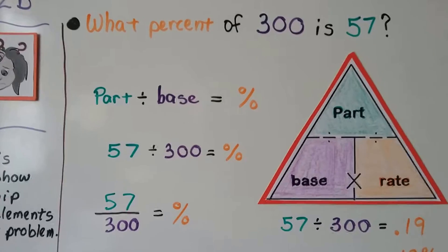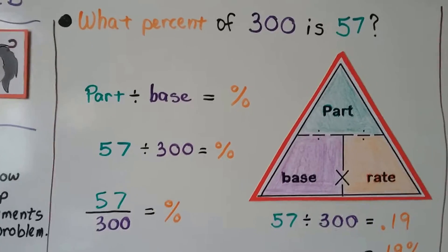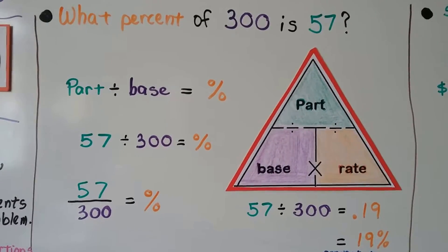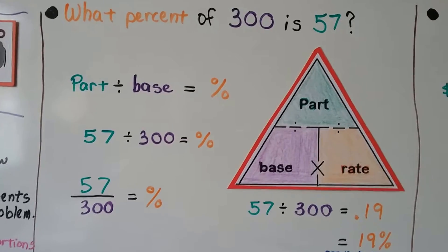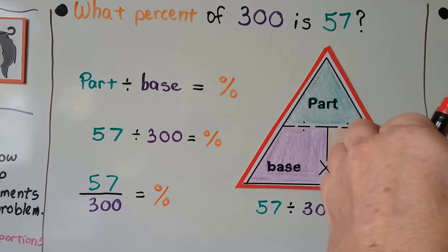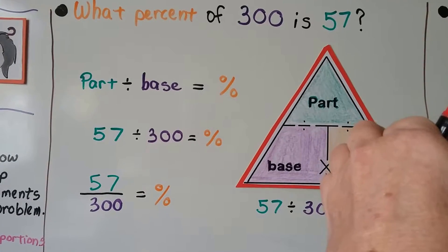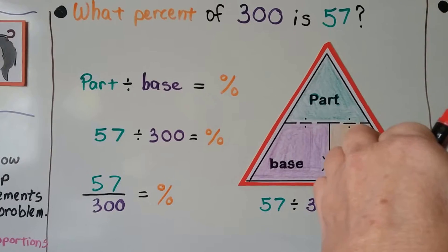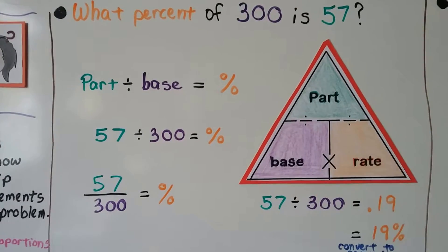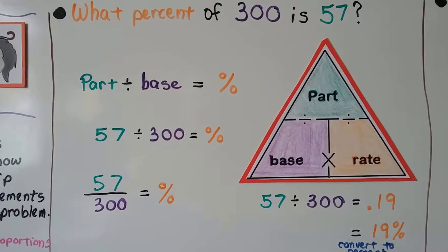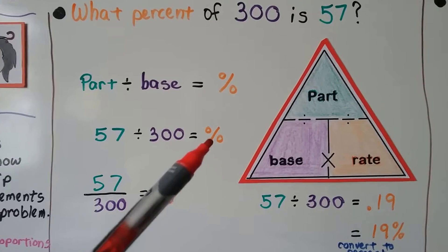What percent of 300 is 57? "What percent" — that's the rate. We need to find what percent of 300 is 57. We cover the rate on the triangle and see that we need to do the part divided by the base. So 57 is the part, 300 is the base, and we need to do 57 divided by 300, and that's going to give us our percentage.